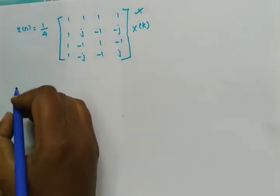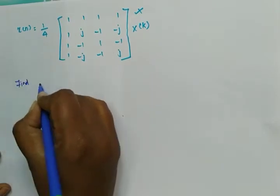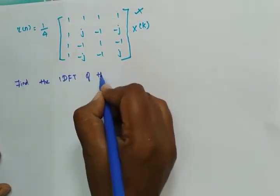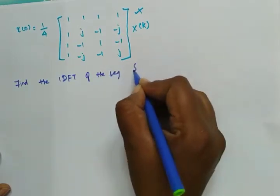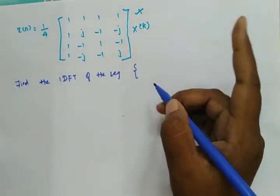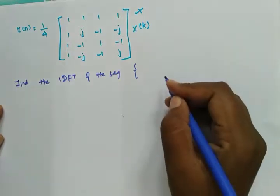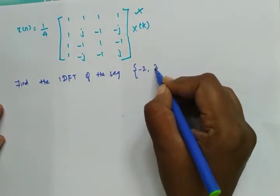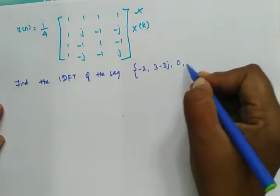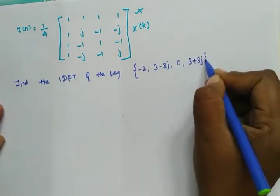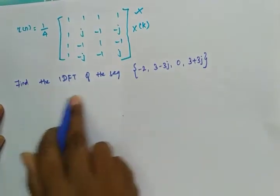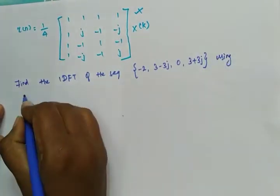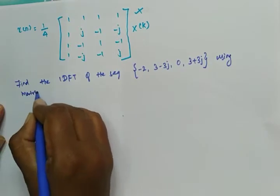Now let us move on to the problem. Find the IDFT of the sequence. We are using the same sequence from before: the input was [1, 1, −2, −2] for DFT, and the DFT answer was [−2, 3−3j, 0, 3+3j]. Now find the IDFT of this sequence using the matrix method.